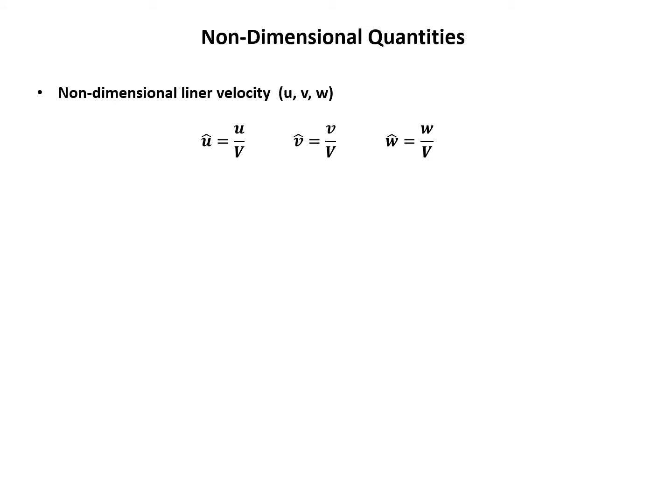The next group of non-dimensional quantities are the non-dimensional linear velocities û, v̂, and ŵ, and they are calculated by dividing by the true airspeed V.